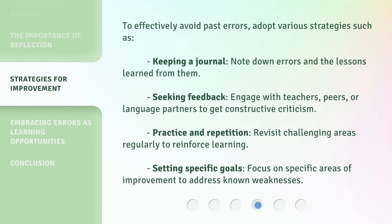Understanding the root cause of your mistakes is the first step in making sure they don't happen again. To effectively avoid past errors, adopt various strategies such as keeping a journal — note down errors and the lessons learned from them; seeking feedback — engage with teachers, peers, or language partners to get constructive criticism; practice and repetition — revisit challenging areas regularly to reinforce learning; and setting specific goals — focus on specific areas of improvement to address known weaknesses.